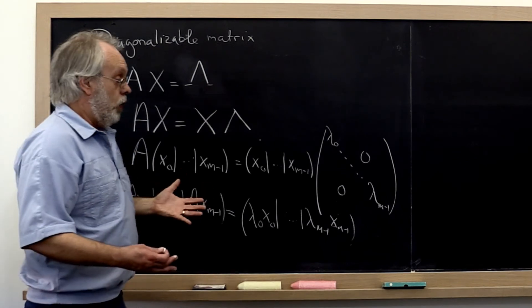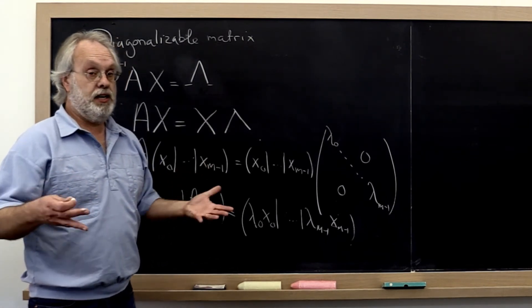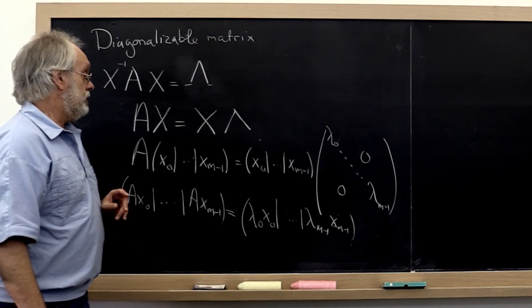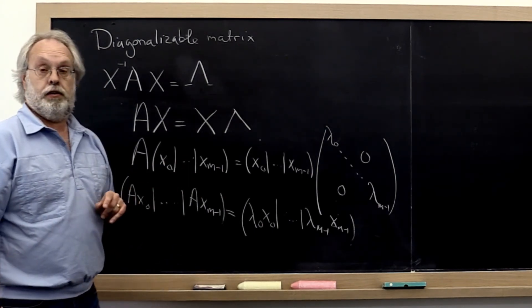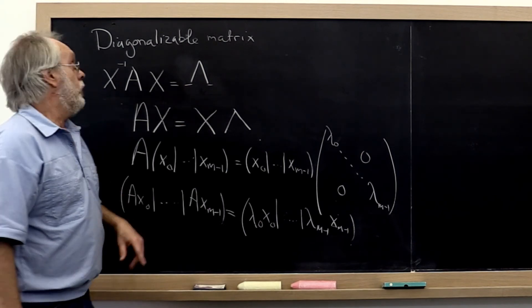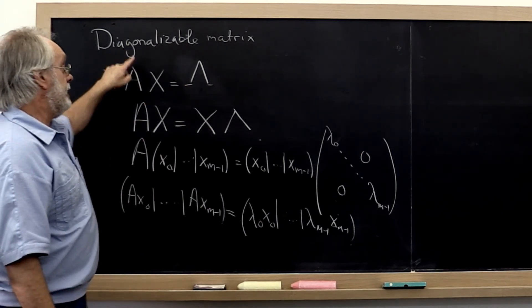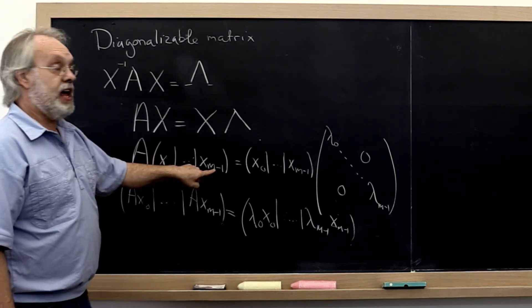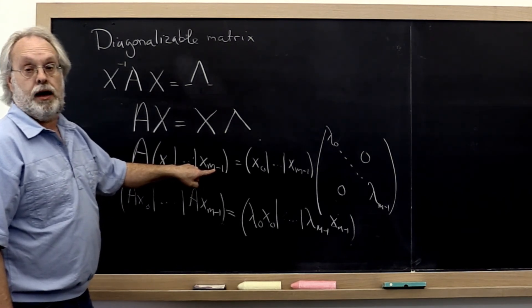Now we've already learned that we may not actually have M linearly independent eigenvectors. So a matrix is diagonalizable if and only if it has M linearly independent eigenvectors.